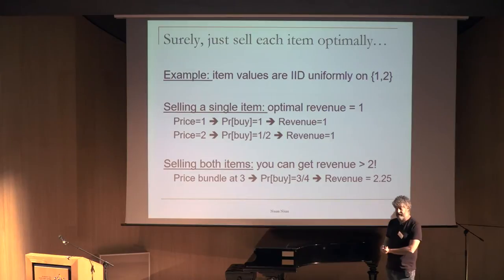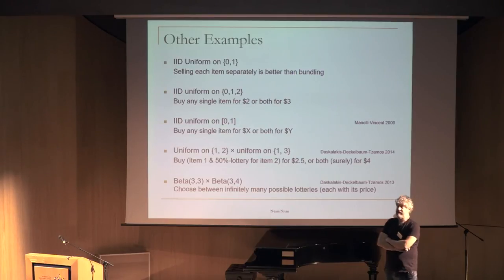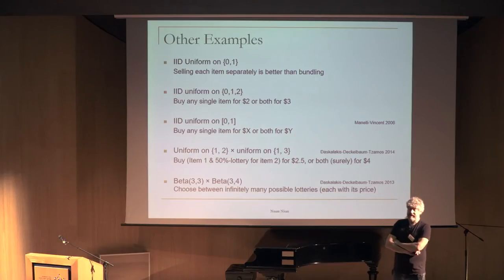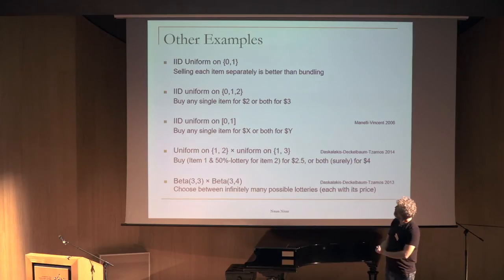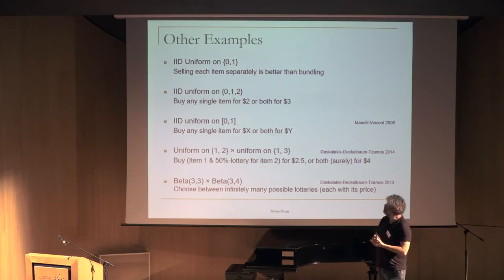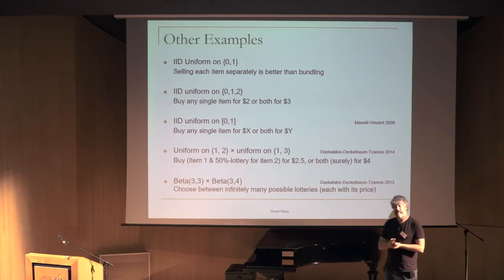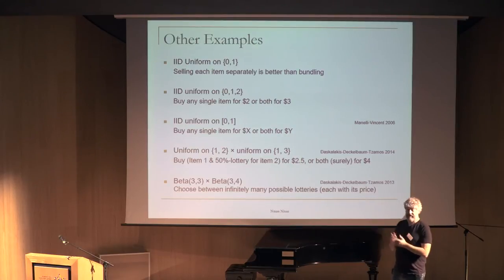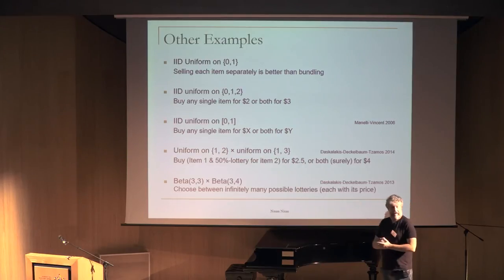It's not always the case that bundling makes more money than selling separately. For values uniform on [0,1], selling separately is better. For values on {0, 1, 2}, the best is neither selling separately nor as a bundle, but offering one item for $2 and a discount price of $3 for both. Even for continuous distributions like uniform on [0,1], the optimal auction requires a six-page paper to determine the optimal prices.